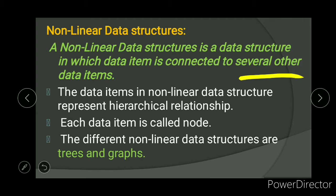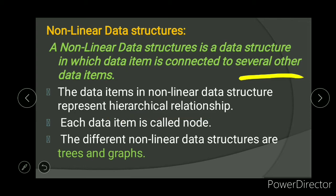Data items in a non-linear data structure are represented in a hierarchical relationship. Hierarchical relationship means the nodes may be called parent node, child node, or siblings. Non-linear data structures represent hierarchical relationships, and each data item is called a node. The different non-linear data structures studied here are trees and graphs.